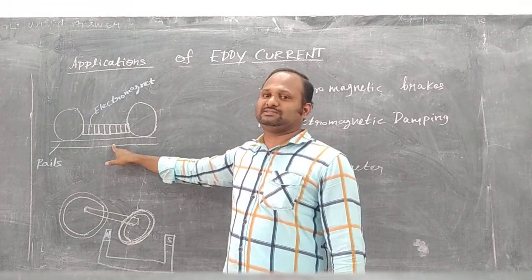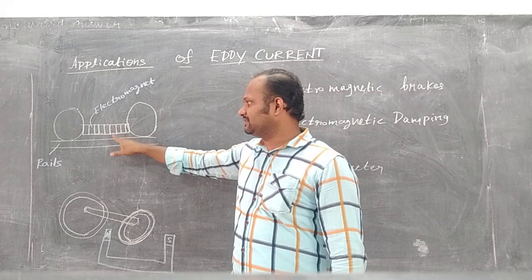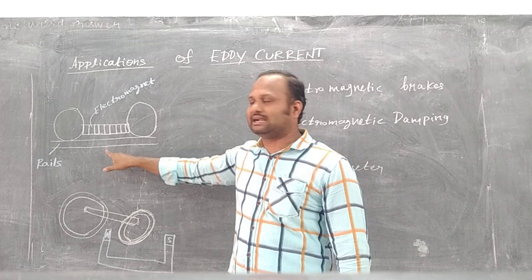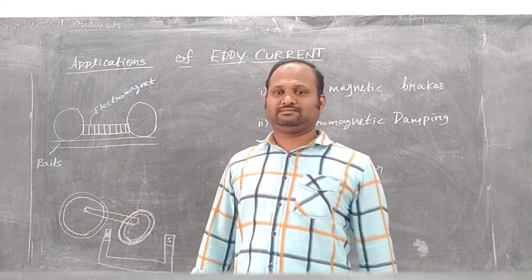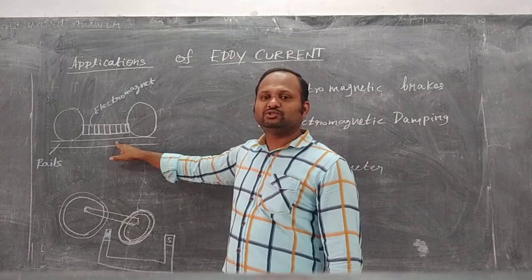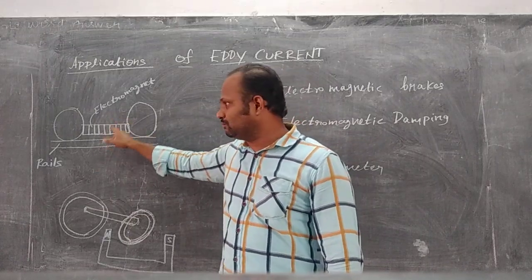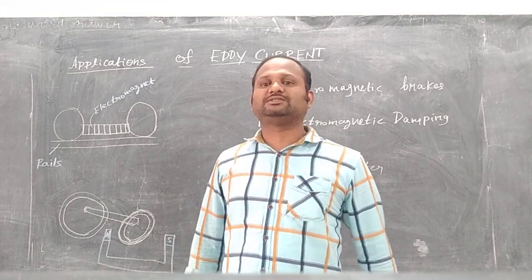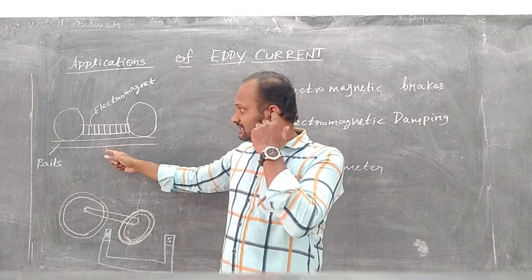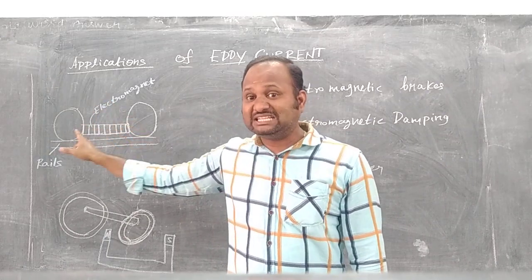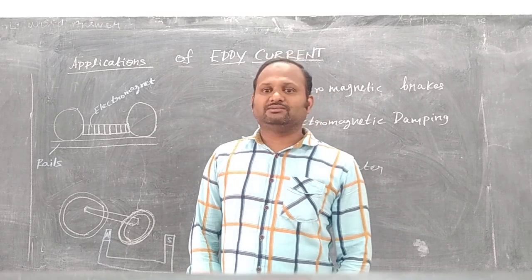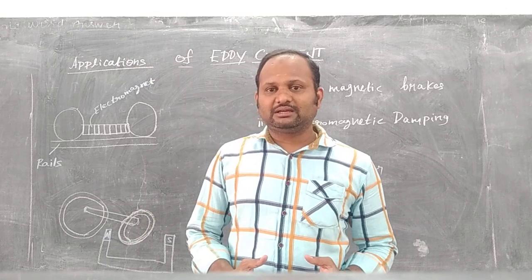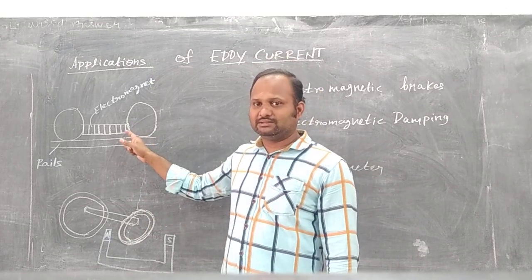There is a change in the magnetic flux around the rails, so an EMF is induced in the rails and an eddy current is produced inside the rails. This eddy current strongly opposes the motion of the wheels of the train — that is, it provides a damping force which opposes the motion, according to Lenz's law. So the wheels of the train immediately come to rest when the brake is applied.